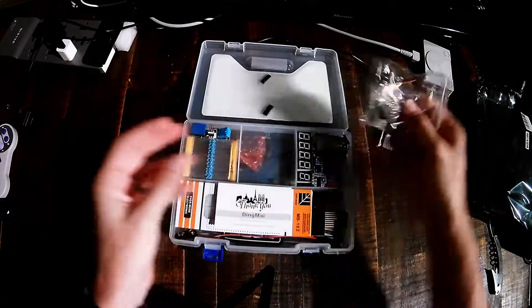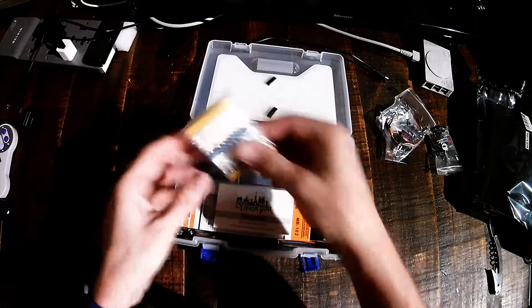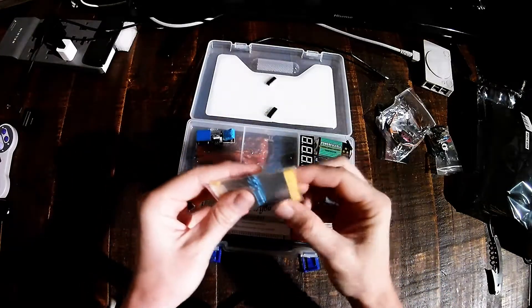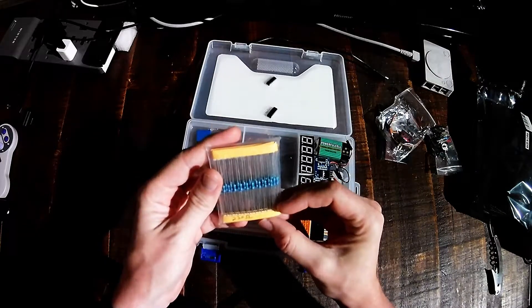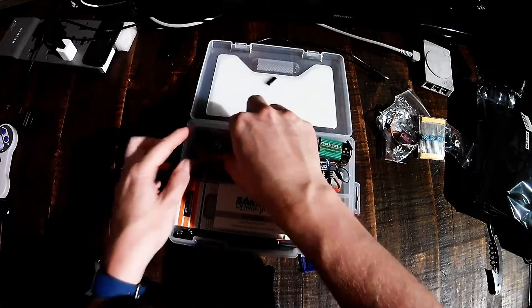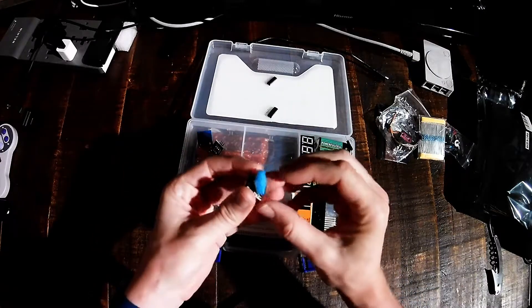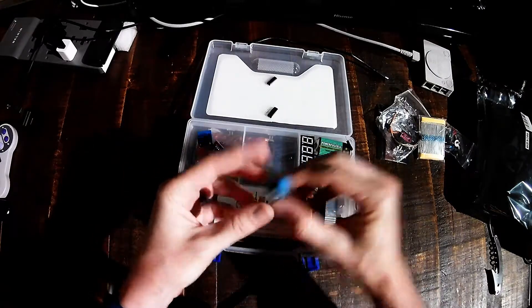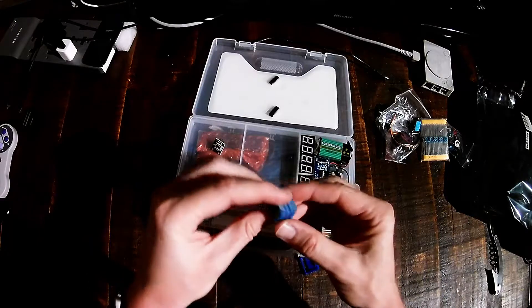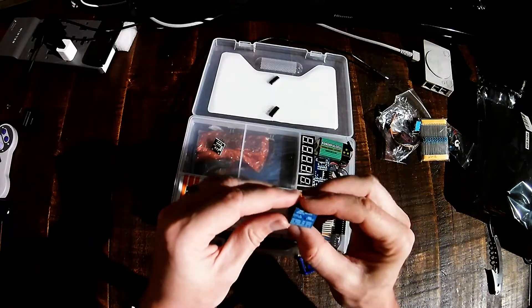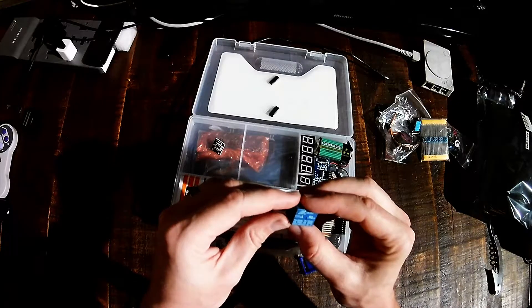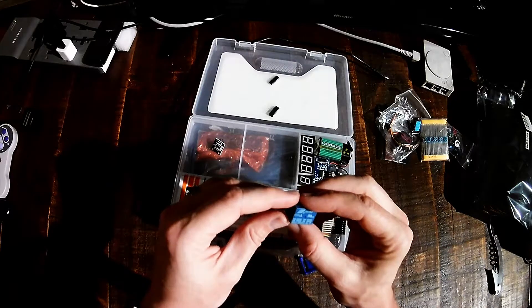A servo motor. A ton of resistors. And it looks like it's labeled with the resistance values on it. You've got a humidity temperature sensor. This looks like a relay. A 10 amp, 125 volt relay.